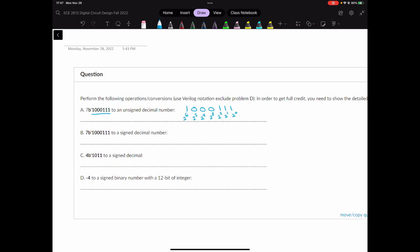So 2 to the power of 6 is 64 plus 2 to the power of 2 is 4 plus 2 plus 1. That will give us 71.